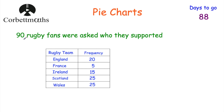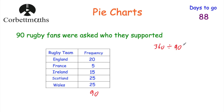The question says there are 90 rugby fans, so when we add these numbers together we should get 90. 20 plus 5 is 25, plus 15 is 40, plus 25 is 65, plus 25 is equal to 90 — fantastic. Now a pie chart is a full circle, that's 360 degrees, so we take 360 divided by 90 to find out how many degrees each rugby fan represents. 360 divided by 90 is equal to 4.